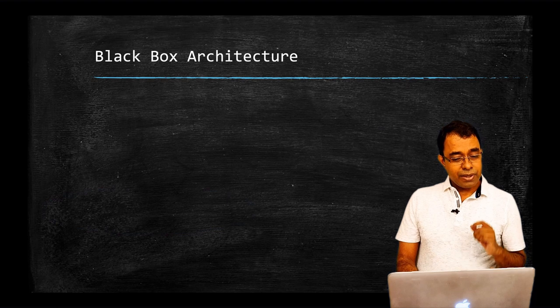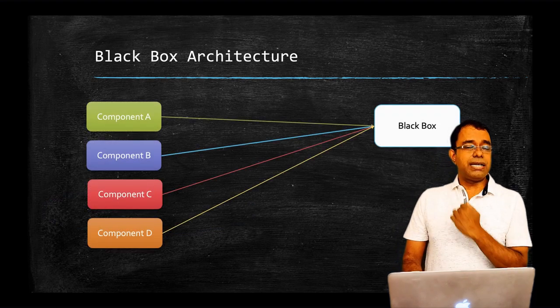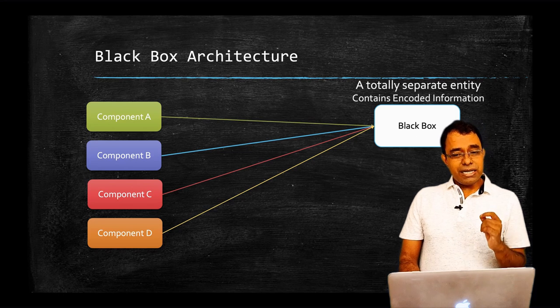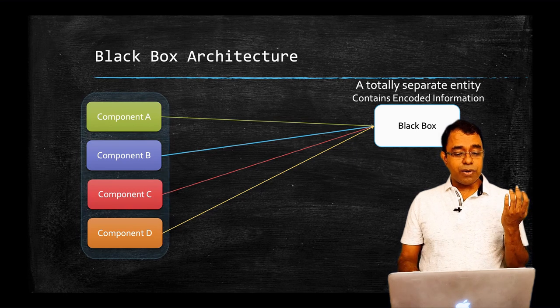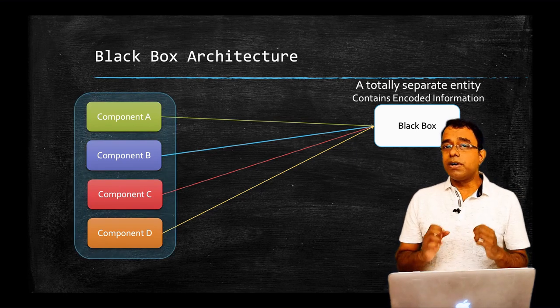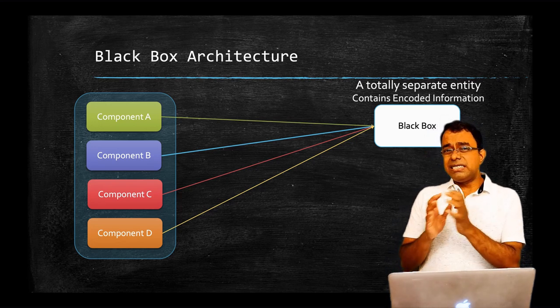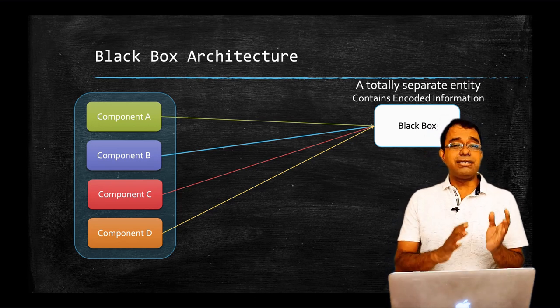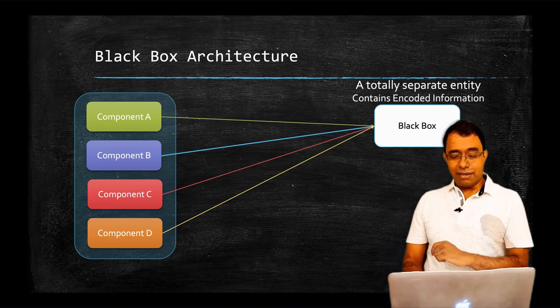So let's go ahead and talk about black box architecture. So this is how black box architecture looks like. There is a totally separate entity which is connected to every component. There are thousands of components in a plane and the functionality of a component is not dependent upon black box. So black box has nothing to do with the component functionality. It just stores information about what is going on in those components in it.